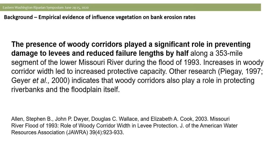Some other interesting work came out of the massive floods — over a 500-year event, as USGS termed it in 1993, in the Missouri system. Levee failures were dramatically reduced where there was significant riparian forest between the river and the levees. When we can keep a buffer between our river and our infrastructure and communities, it's another good reason to do so.